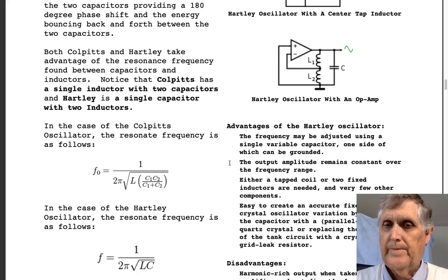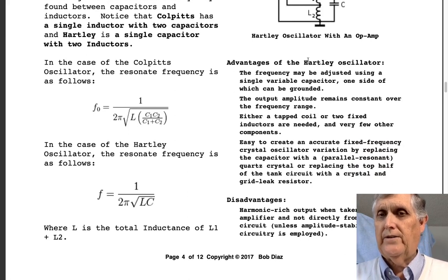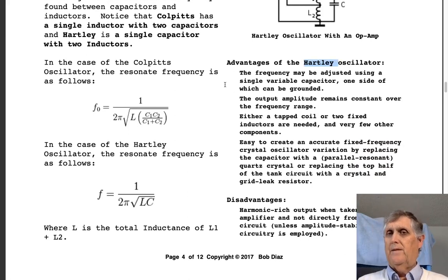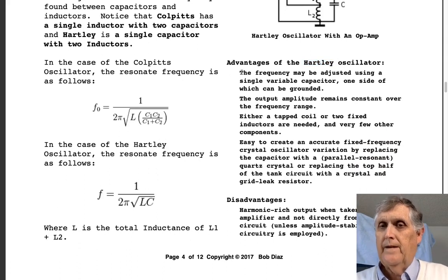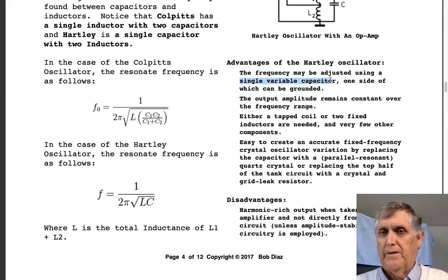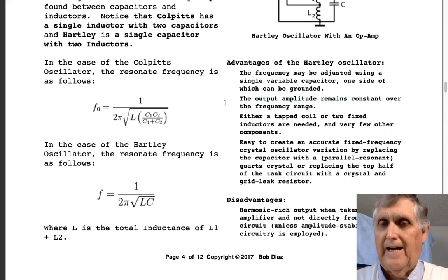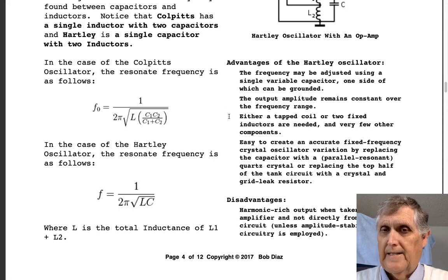Why would I choose one over the other? Let's talk about why I'd pick the Hartley. The frequency can be adjusted using a single variable capacitor which can be grounded—that's a good idea. The output amplitude remains constant over the frequency range. That's good. We need something like that, say we're building an RF oscillator and we want to vary it. A tapped coil or two fixed inductors are needed, but check this out: there are very few other components.